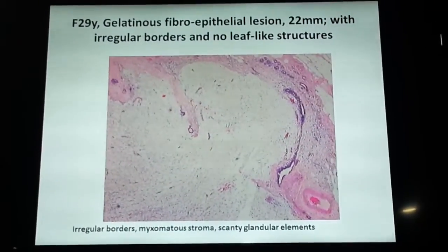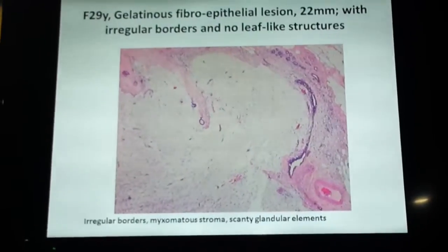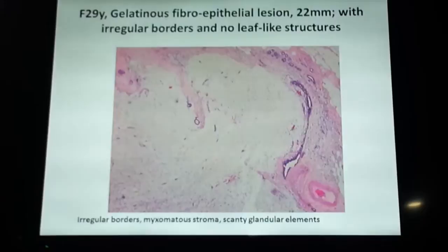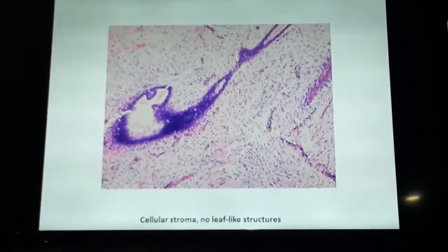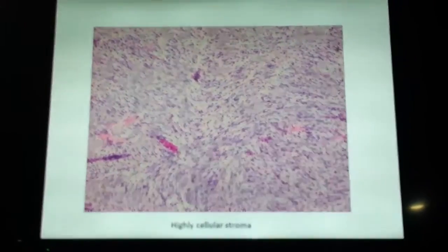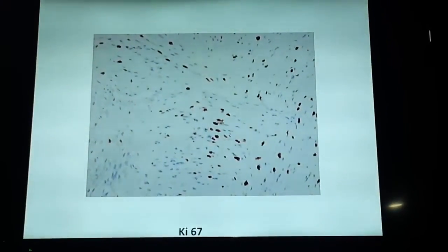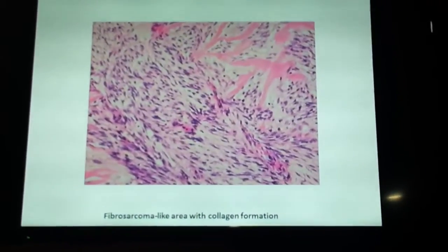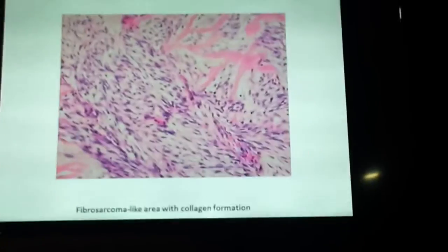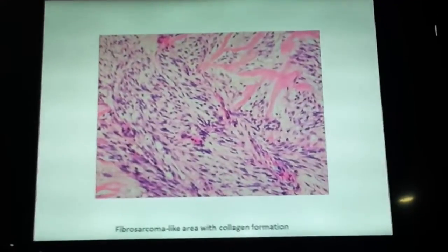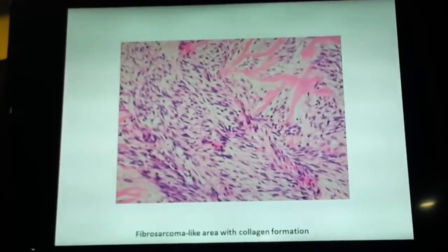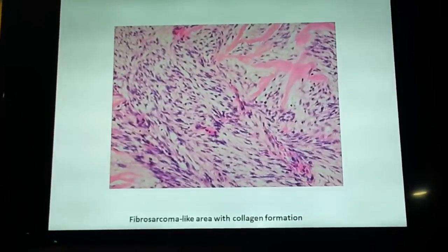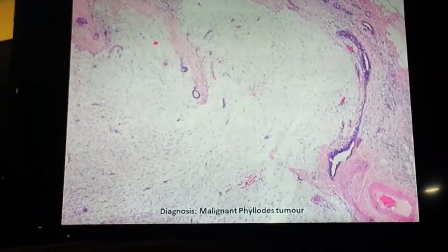And we come to this field where it's quite obvious that the border is irregular, the lesion is infiltrated — you can't really draw a line around this lesion. The stroma itself is a bit cellular, and in some areas the stroma is very highly cellular, looking like a sarcoma. Mycotic activity is very high and the nucleus cell is high as well. So although there are no leaf-like structures, there are malignant changes present. I can't call it fibromyalinoma — I would call it malignant filoides tumor, because there are glandular elements present.